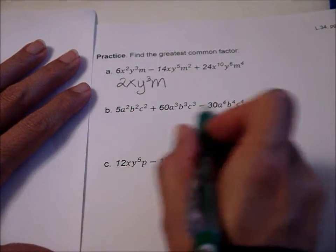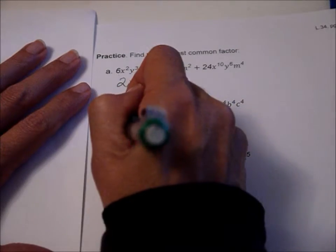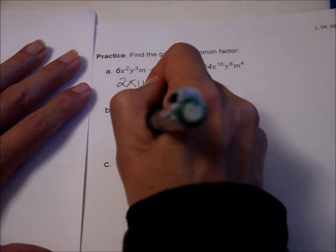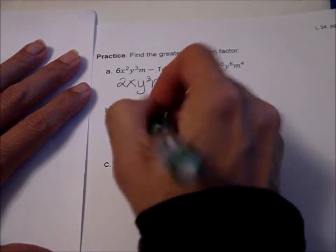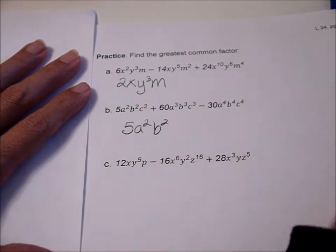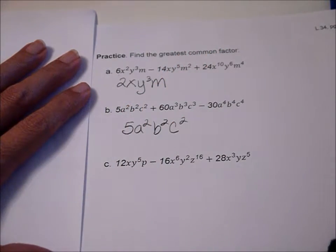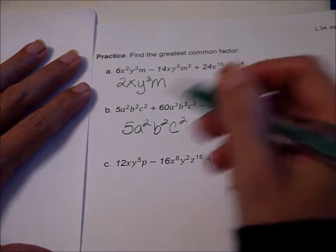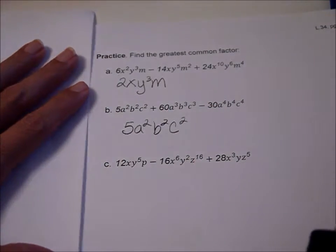Now we've got 5, 60, and 30. Well, 5 goes into all those. It looks like a² is our limit, b², and c². They all at least have that many a's, b's, and c's.